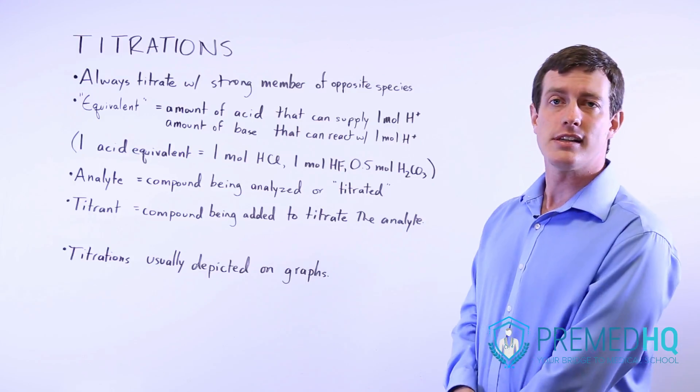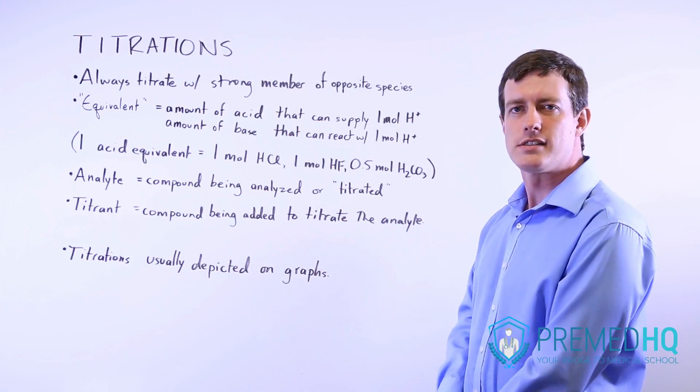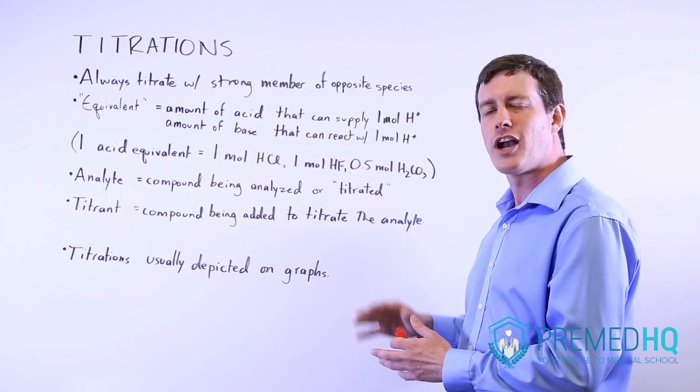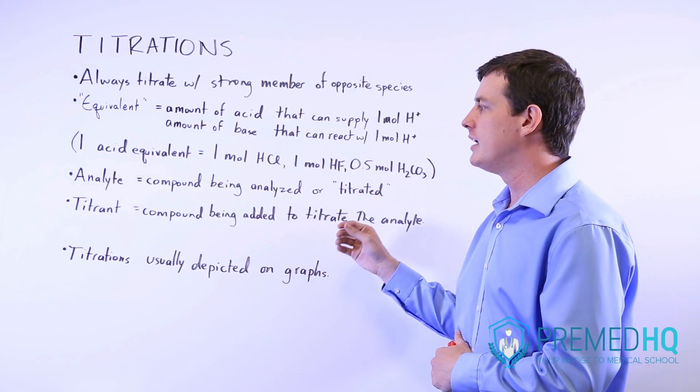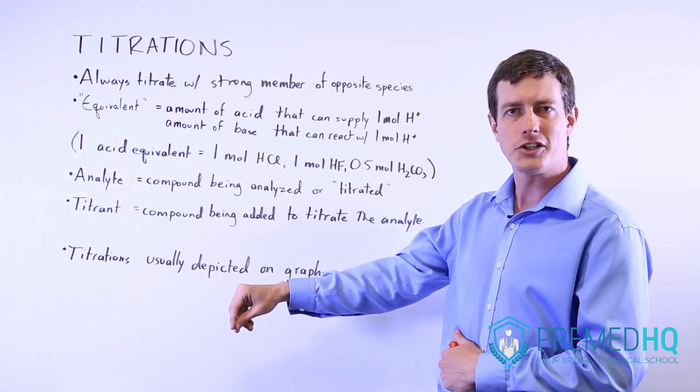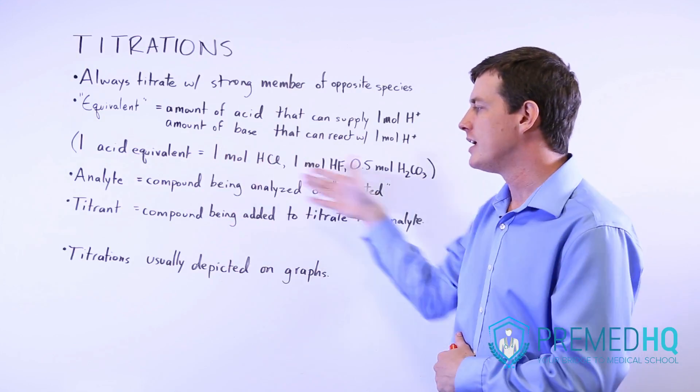The titrant is the species that you add to titrate that analyte. So if you're adding NaOH to an acidic solution, then the titrant is the NaOH and the acidic solution is the analyte.